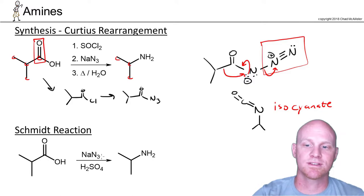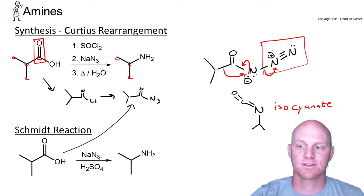The Schmidt reaction is really similar. Instead of going through the acid chloride, we're just going to turn this directly into this acyl azide in the process. But eventually that gets converted into the isocyanate.